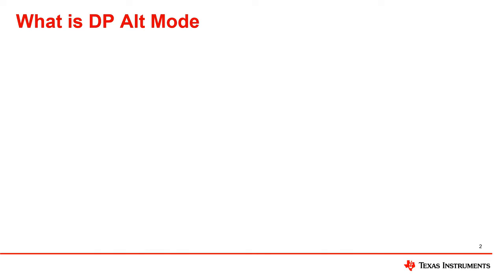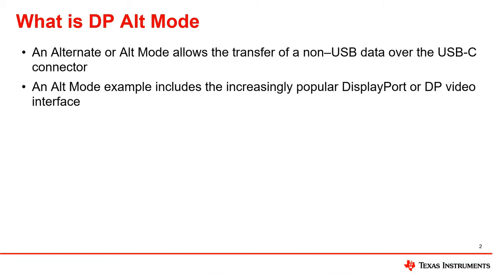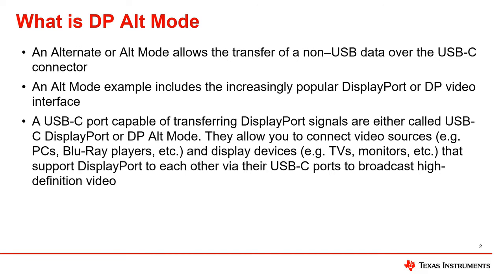So what is DP alt mode? DP alt mode is an alternate mode which allows the transfer of non-USB data over a USB-C connector. An example includes the increasingly popular DisplayPort, or DP, video interface. A USB-C port capable of transferring DisplayPort signals is called a USB-C DisplayPort or DP alt mode port. These ports allow you to connect video sources like PCs and Blu-ray players, and display devices like TVs and monitors, via their USB-C ports to broadcast high definition video. Please note that DP alt mode is not the same as USB-C. USB-C is a connector type, while DP alt mode is a specific feature supported by some USB-C appliances. Not all USB-C cables or devices support DP alt mode; both the cable and the device must support it for this feature to work.